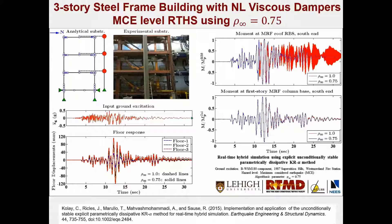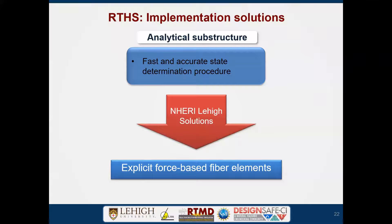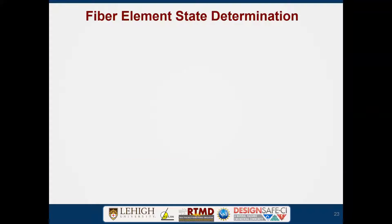The explicit scheme is 2,000 times faster than implicit schemes because we don't have to iterate. Iteration in hybrid simulation is not good because you have to do things very quickly. For state determination, we use force-based fiber elements to model concrete or steel with yielding about bidirectional bending as well as axial force, put in explicit form to keep up with the explicit integration scheme.